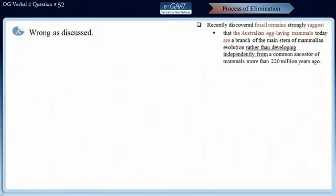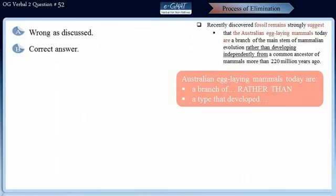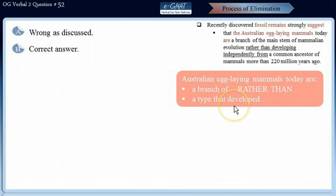Choice A certainly does not correct the error, as we just found. Choice B is actually the correct answer. Here X is a noun phrase as before, and now Y has also become a noun phrase: 'a type that developed from a common ancestor of mammals.' So both entities are now absolutely grammatically parallel, making choice B the correct answer.